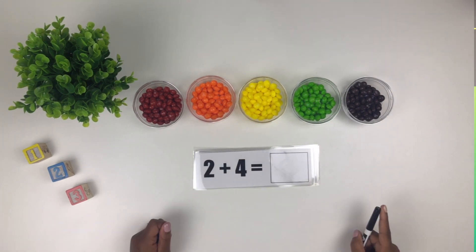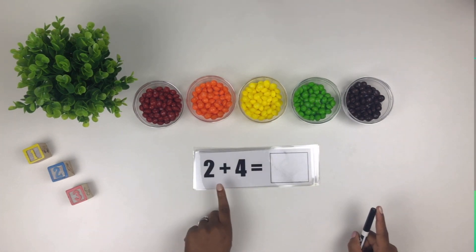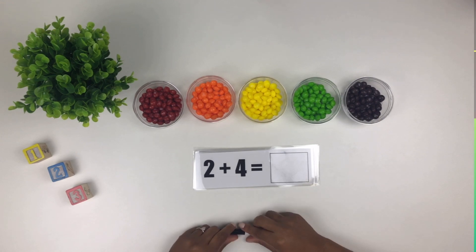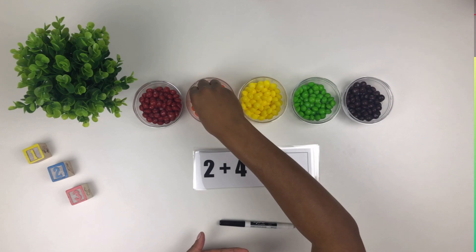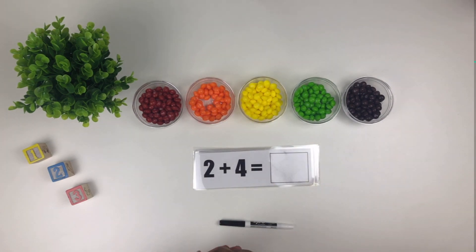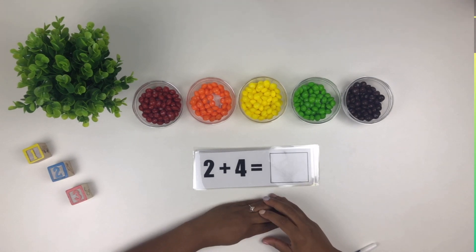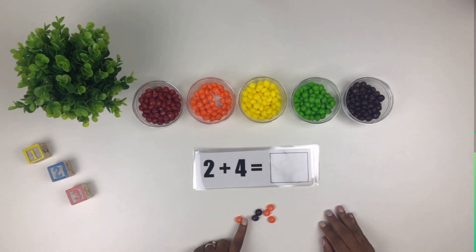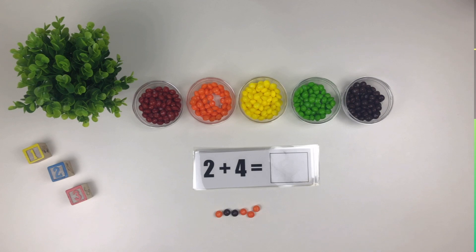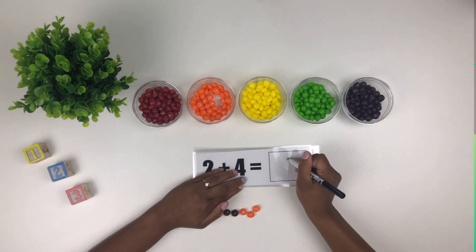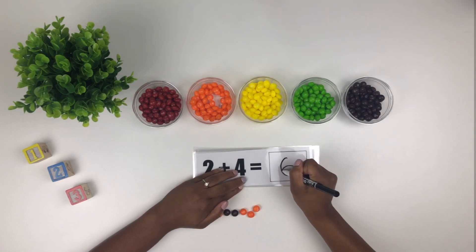Our next problem is two plus four. So we're going to take two purple Skittles and four orange Skittles. Now we count. One, two, three, four, five, six. So two plus four equals six.